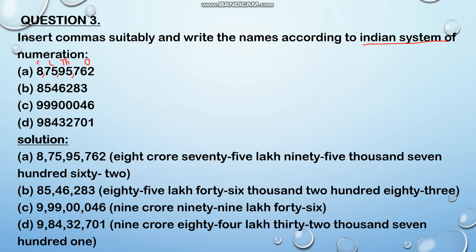Now the next one. From the right, after 3 digits put the first comma, then after each 2 digits put the next comma. The ones period has 3 digits, the thousands period has the next two, and the lakhs period has the next two. This number reads: 85,46,283.